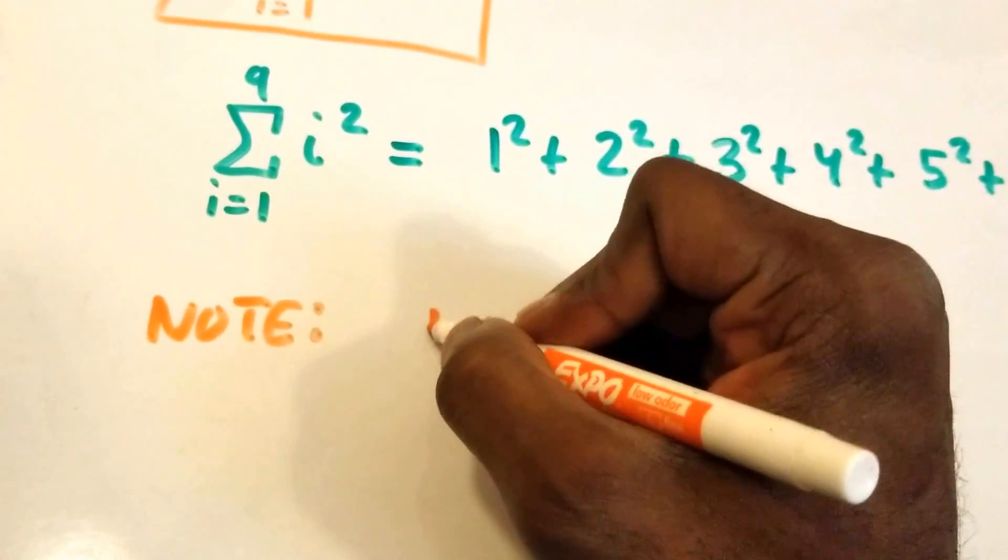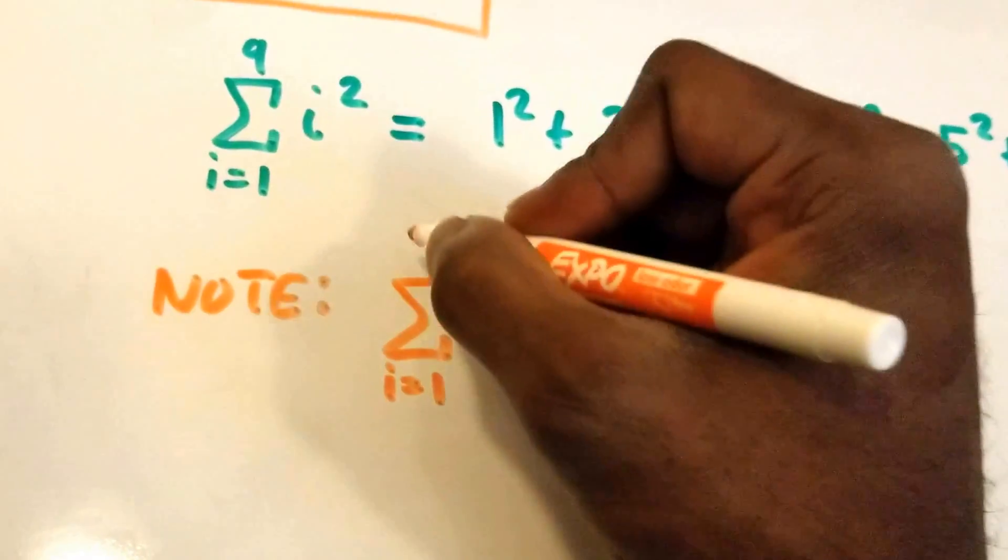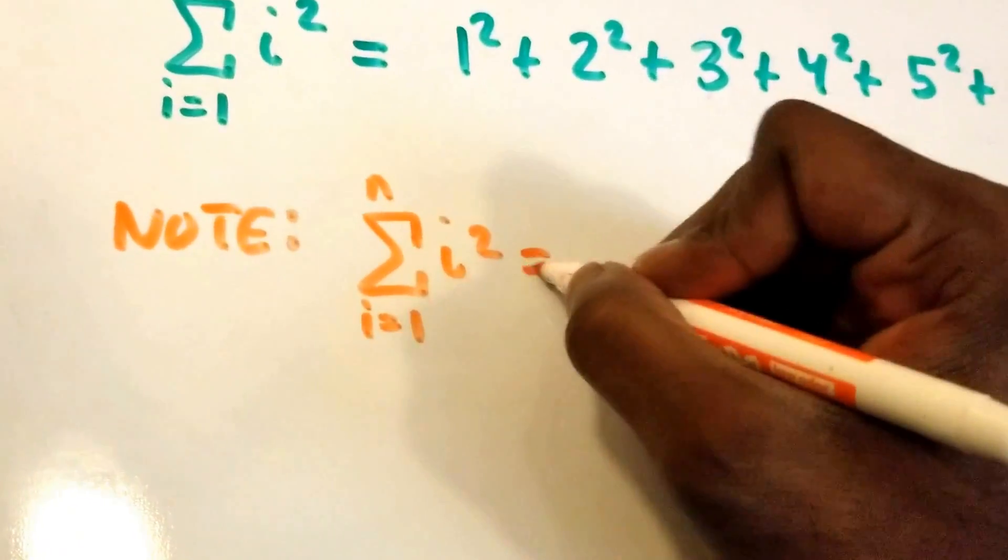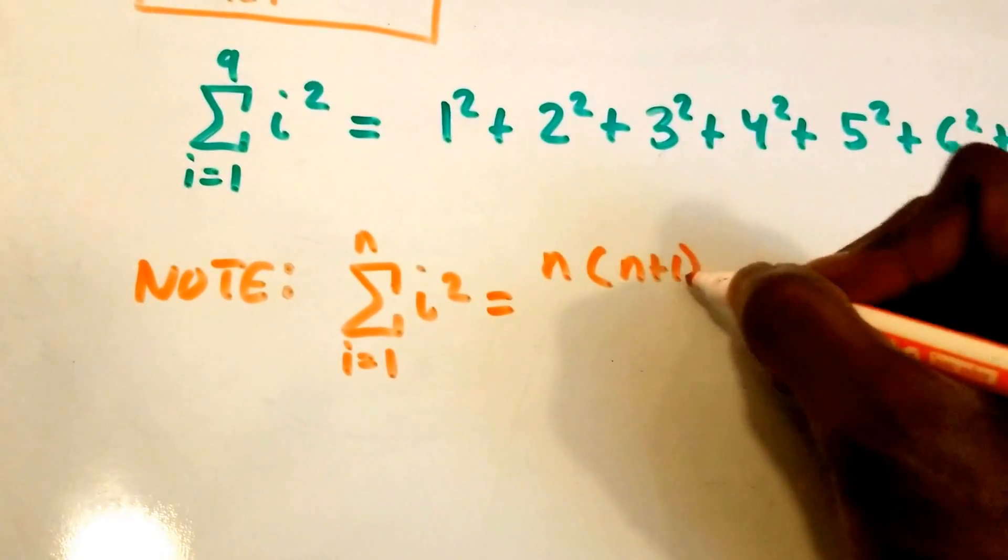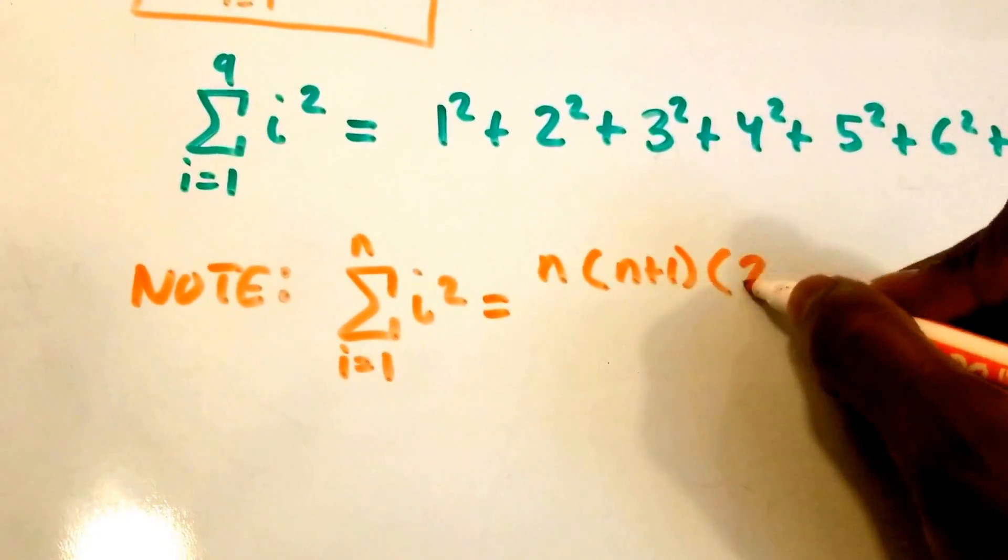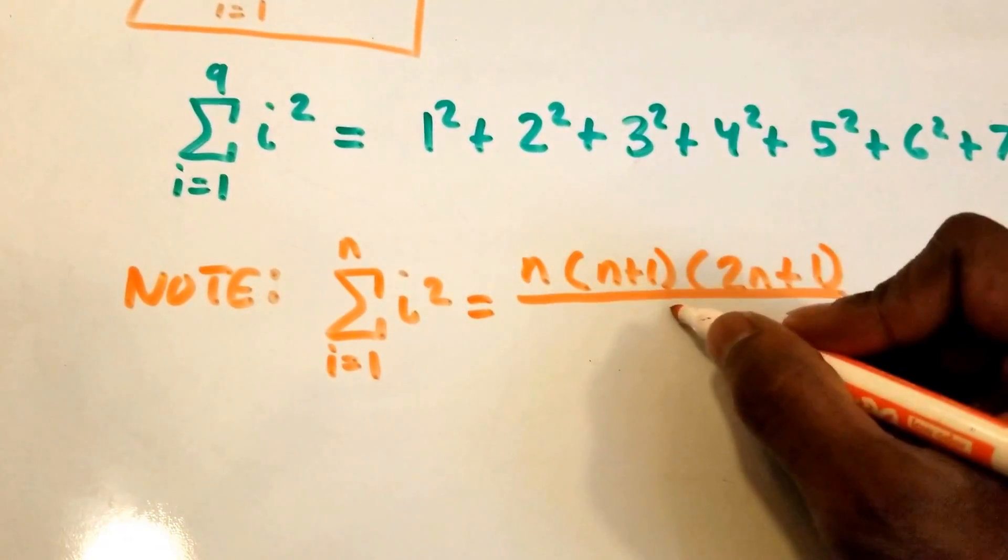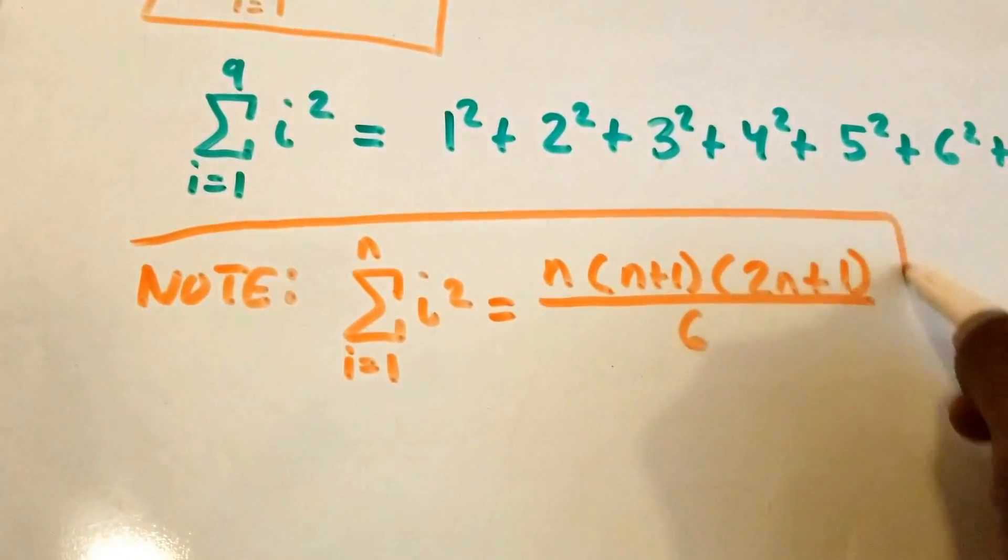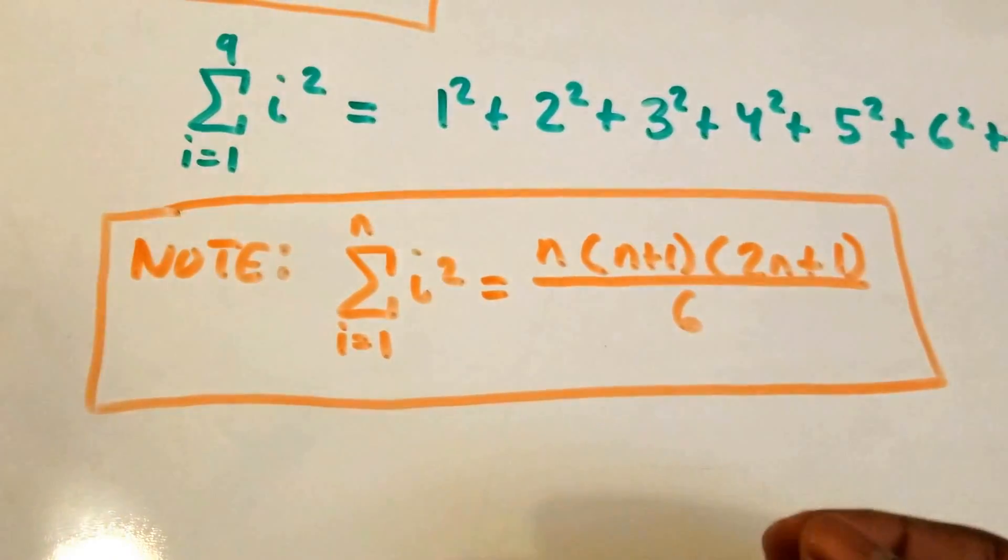And we're gonna write the summation formula. So if we have a summation that starts from I equals 1 to n of I squared, then this is equal to n times n plus 1 times 2 times n plus 1 all divided by 6. I'm just gonna go ahead and put that in a nice rectangle there so we know to use it.